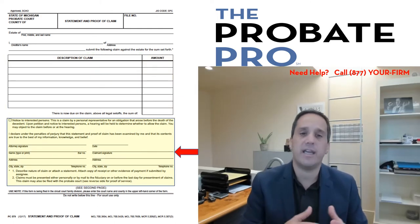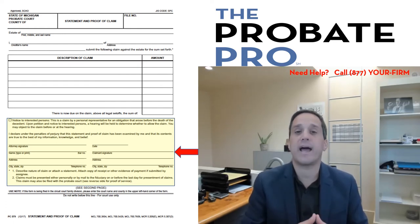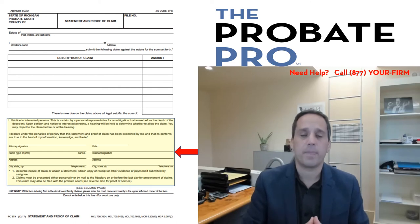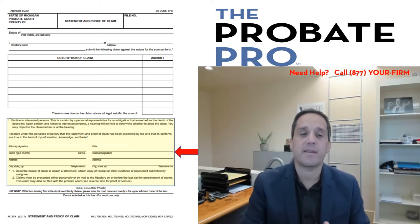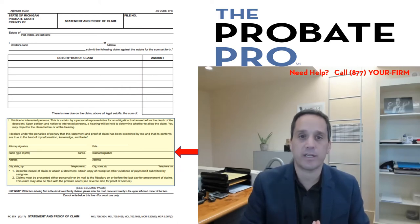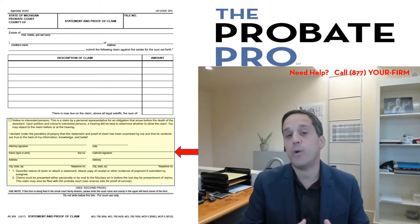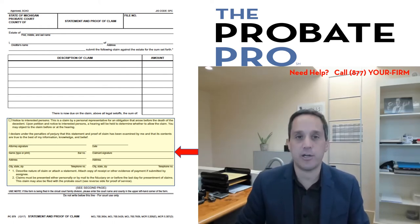The next step is a signature of the claimant — the creditor claimant asserting the claim — as well as the description of the claim itself with additional documentation. On the back side of this form is a proof of service to allow you to certify that you have afforded the personal representative with notice. We also recommend that you file this with the probate court itself so it becomes a docketed entry within the probate file.